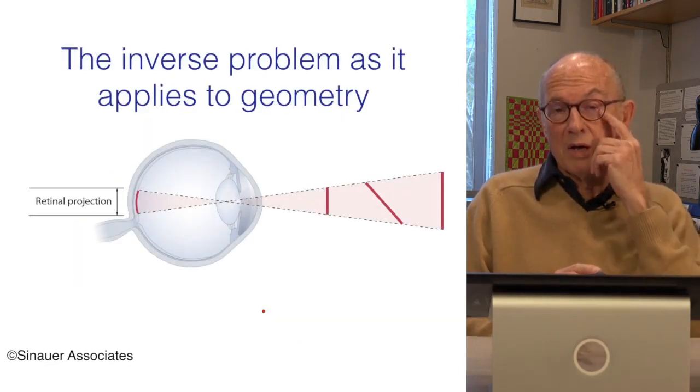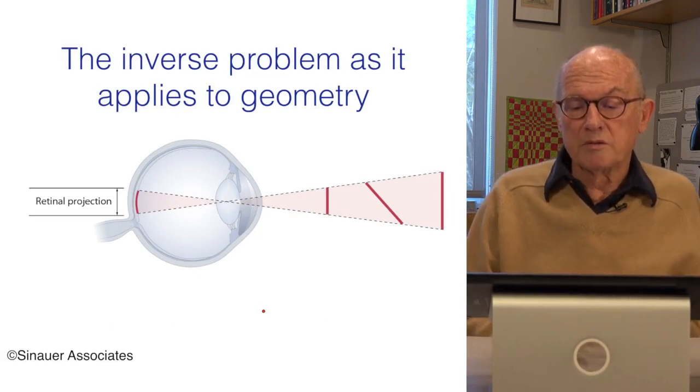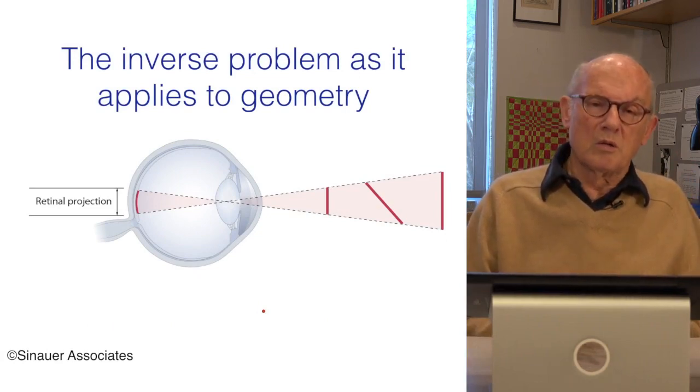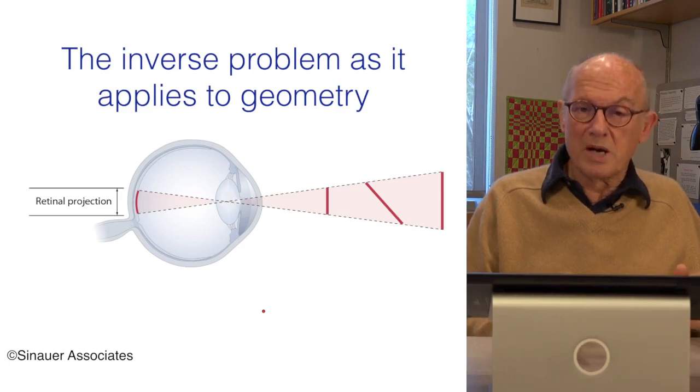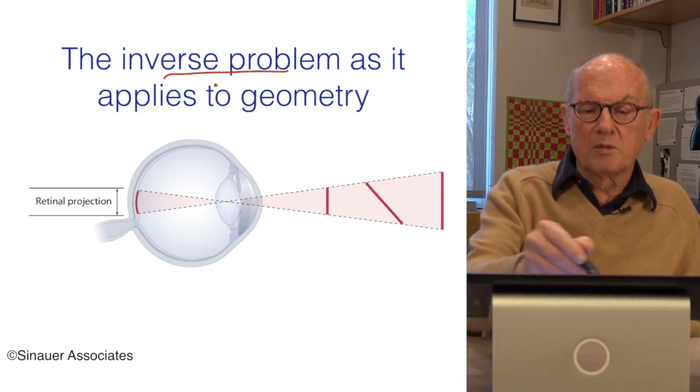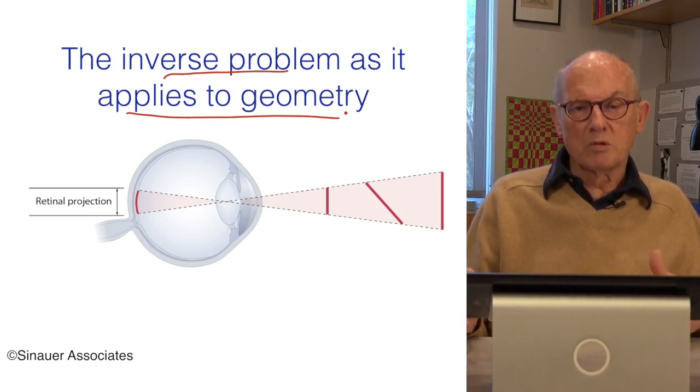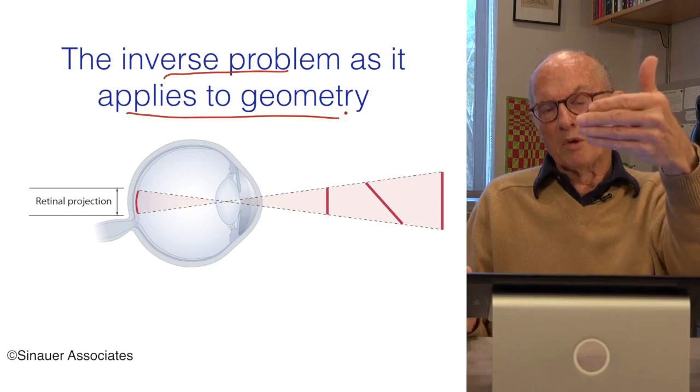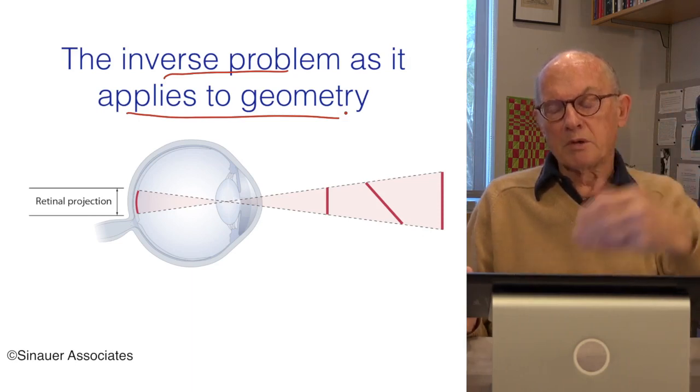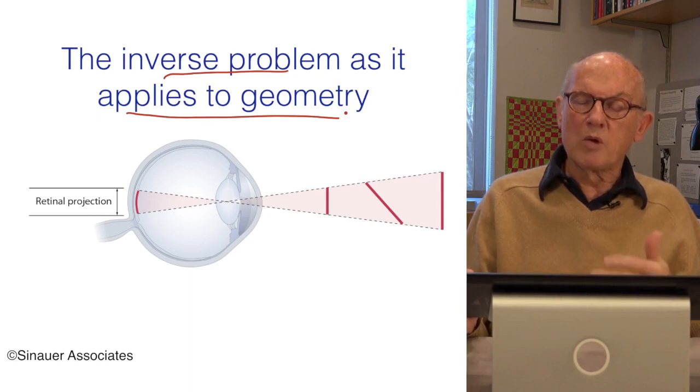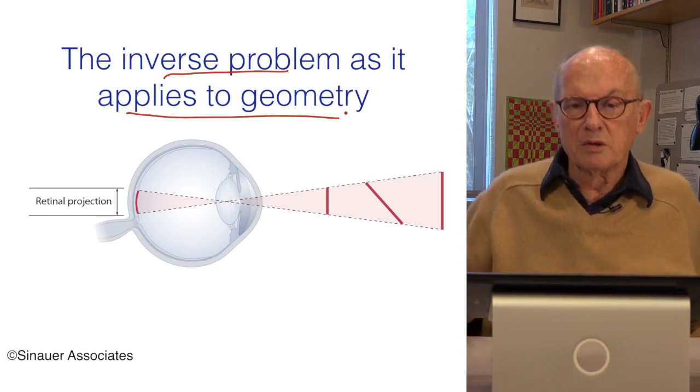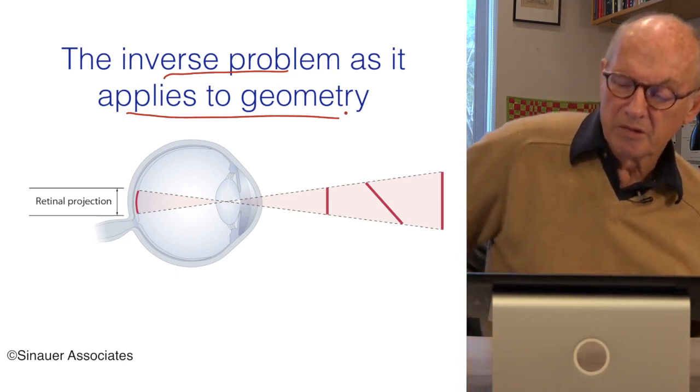But the same thing applies to geometry, and in fact, to all the other qualities of vision that we've been discussing. And we'll come back and discuss all these in more detail. Let me show you this inverse problem as it applies to geometry, because I think it's also very easy to see why it is that we have trouble seeing, or we would have trouble seeing, the physical parameters of the world, the line lengths, the angles, the shapes that are out there, why we have this discrepant perception of the stuff that's really easily measured in the physical world that's there in reality.